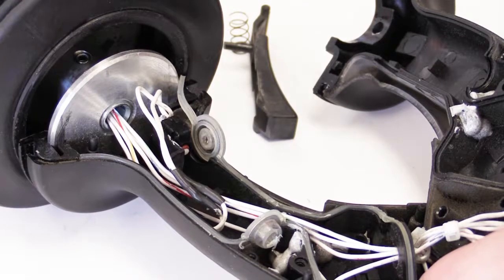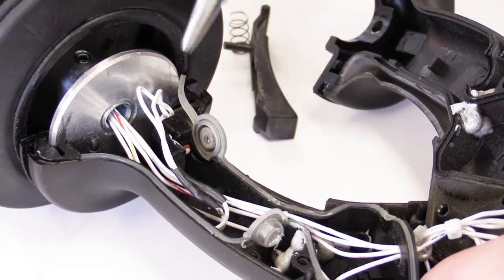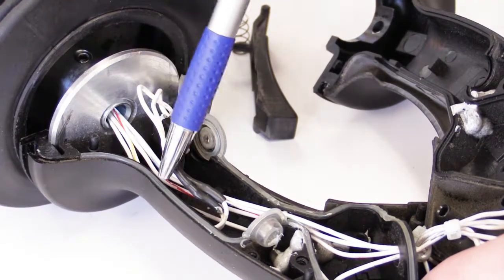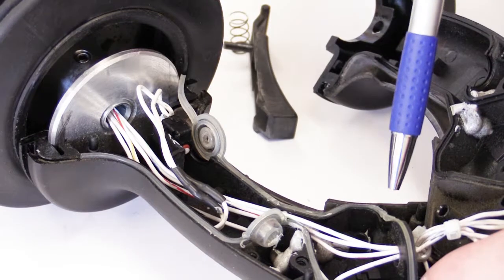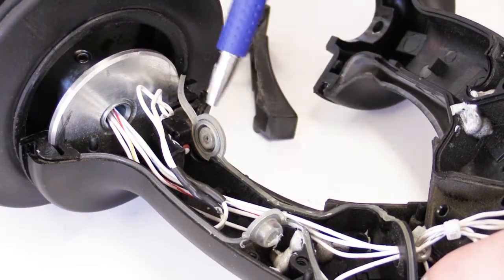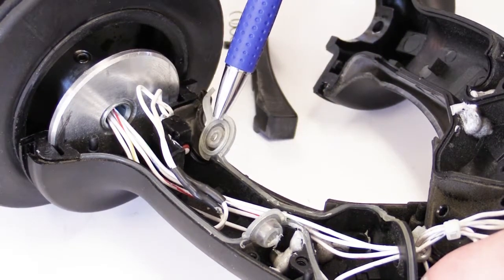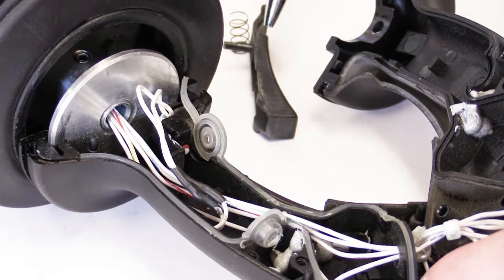At this point, we can reassemble the two halves of the joystick housing. You're going to want to ensure that the perimeter seal around the one half of the joystick housing is properly installed, leaving the one end loose for the dead man actuator lever.